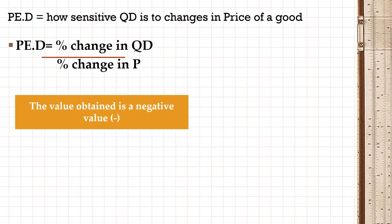Price elasticity of demand is defined as how sensitive quantity demanded is due to changes in price of a good. Whenever we are talking about price elasticity of demand, we measure quantity demanded — we do not measure quantity supplied. It is computed via the formula: percentage change in quantity demanded divided by percentage change in price.